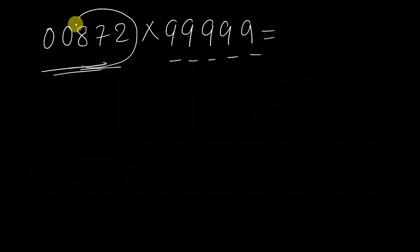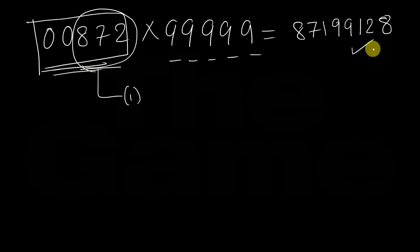What is the trick? We have to apply Ek Nunein Purvin Sutra on this number. That means we have to reduce 1 from this number. It will become 00871. Then, we have to write the complement of 00872. Complement of 00872 will be 99128.